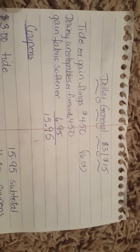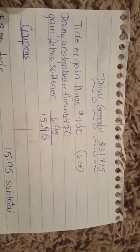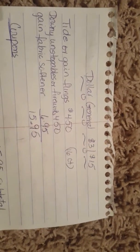Also the Downy Unstoppable or the Fireworks for $4.50, and a Gain product - it could be the fabric softener, the dryer sheets, or the detergent for $6.95. This brings your subtotal to $15.95. Remember you have to